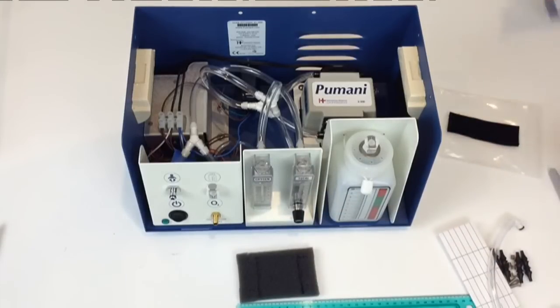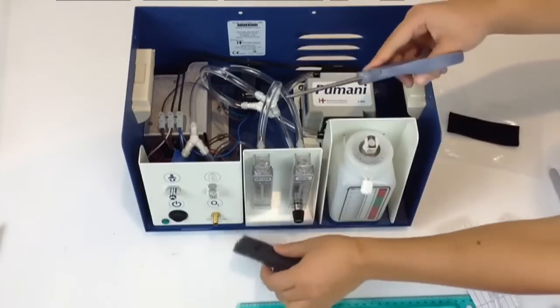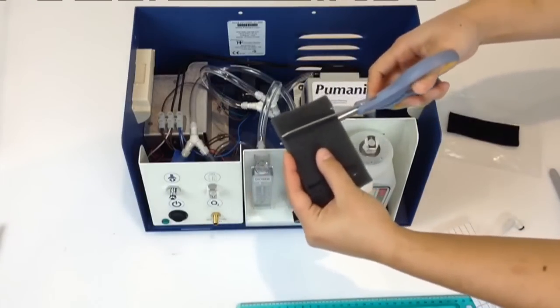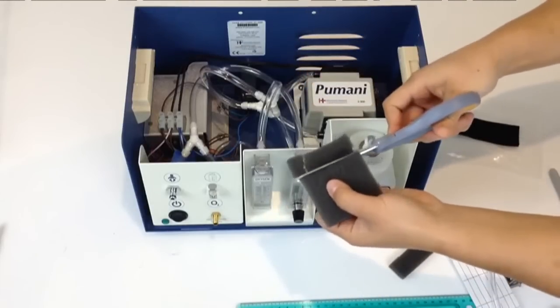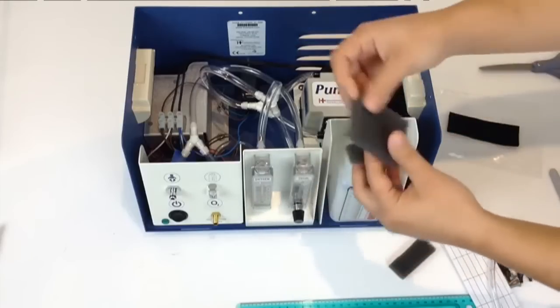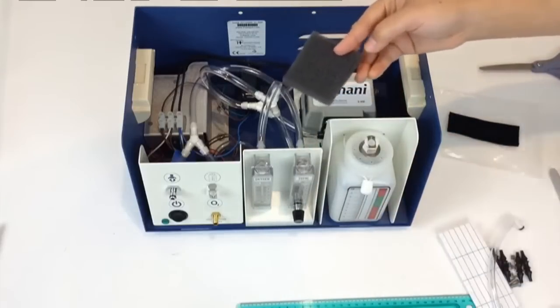Then you'll take scissors and you'll cut along those two lines, trimming two centimeters off of each side of the filter. And now your filter is ready to go under the pump.